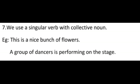Seventh rule: We use a singular verb with a collective noun. Examples: 'This is a nice bunch of flowers.' 'A group of dancers is performing on the stage.' Here we can see collective nouns — 'bunch of flowers,' 'a group of dancers' — so along with collective nouns we use only a singular verb.